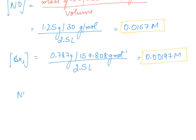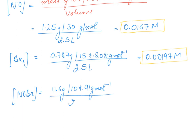Now for the concentration of NOBr: the mass given is 11.6 grams, divided by the molar mass of 109.91 grams per mole, divided by 2.5 liters. This value comes out to be 0.0422 molar.